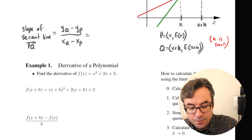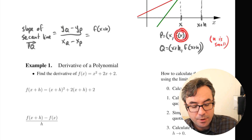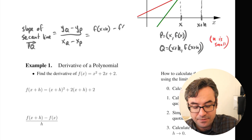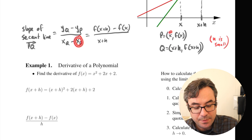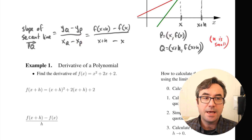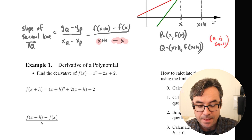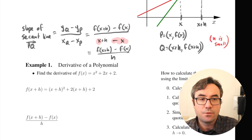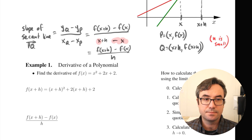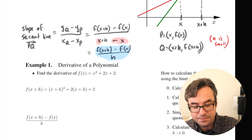Using these coordinates to calculate the slope: the y-coordinate of Q is f of x plus H, and the y-coordinate of P is f of x, giving us f of x plus H minus f of x. The x-coordinate of Q is x plus H, and the x-coordinate of P is x. Simplifying, the x and minus x cancel, leaving just H. So we get f of x plus H minus f of x, all over H — and this is called the difference quotient.